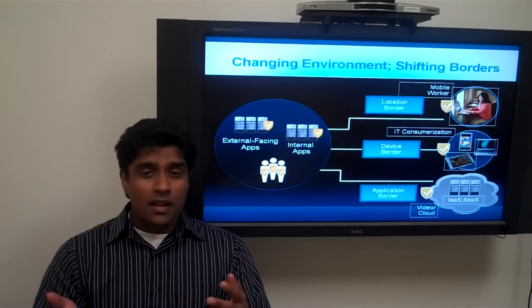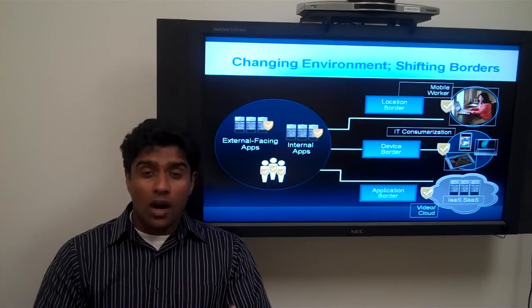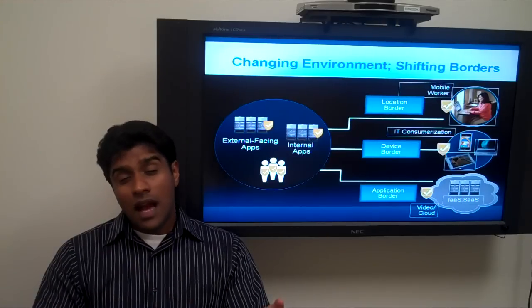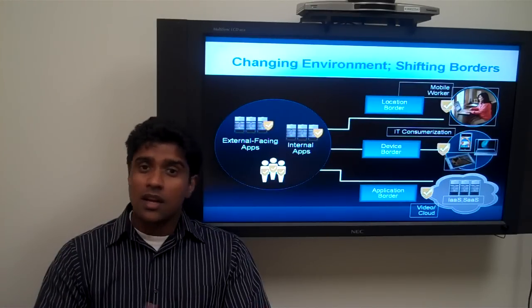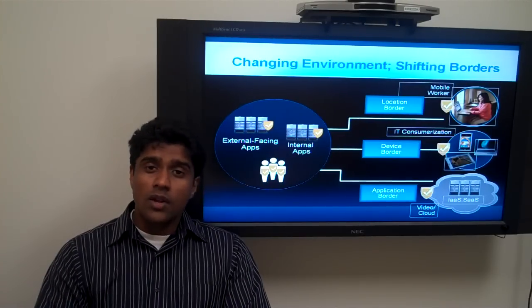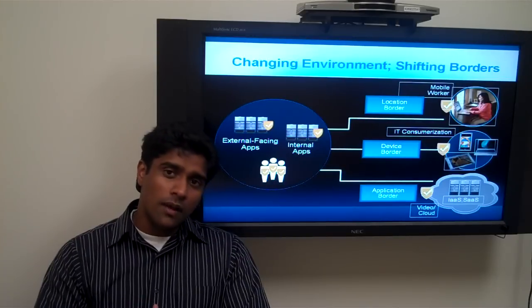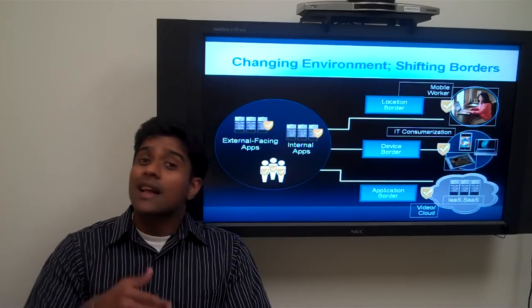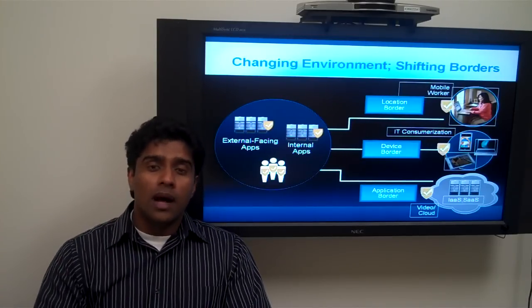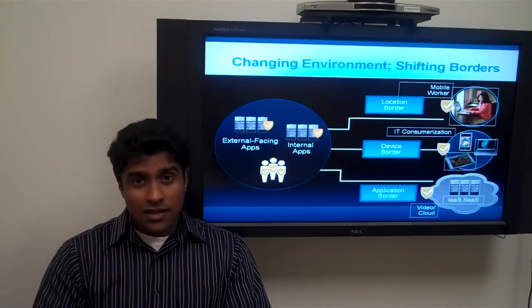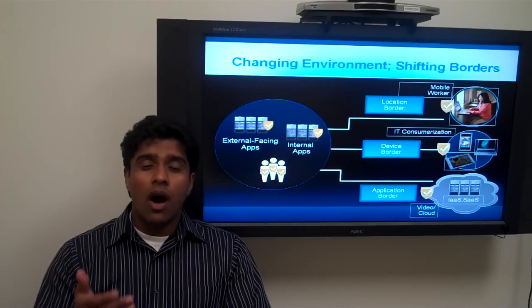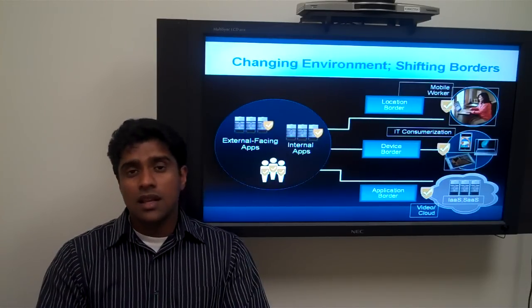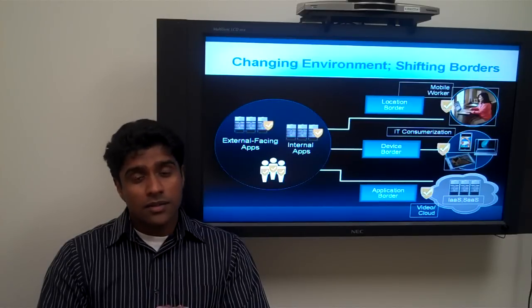The next thing that definitely comes up here is wireless — we're talking about Wi-Fi. We have about 7,000 access points globally across Cisco, used by pretty much every single employee. But there are a lot of trends that we are seeing in the wireless space itself, like integration with mobile networking. Mobile data is another one that's exploding, so wireless and mobile integration is something that we will be seeing a lot in the coming years.